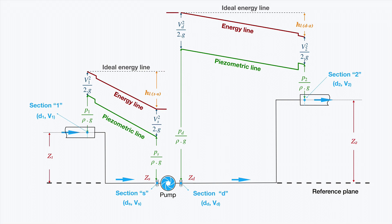This is the energy level we need at section D to transport the fluid from this section to section 2. There is a gap — a lack of energy — that I'm representing here. So we need to add this amount of energy to the system. Who is responsible? The pump. This amount of energy needed by the system is the amount of energy the pump should provide, and this is the pump head — H, HP, or TDH. It can be called in different ways, but the right name is the pump head.